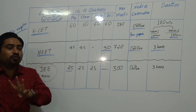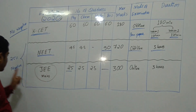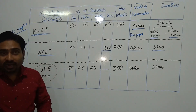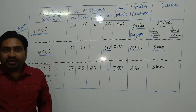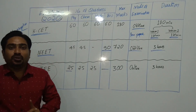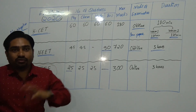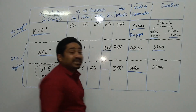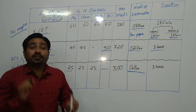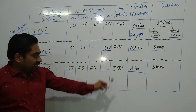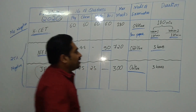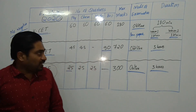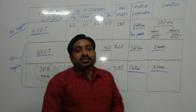Each question in JEE carries 4 marks. It also contains 25% negative marking — for every wrong answer you lose 1 mark, and for a correct answer you get 4 marks. JEE Main is an online, computer-based exam. The duration is 3 hours.